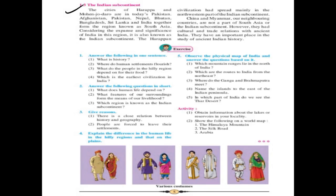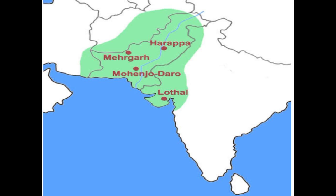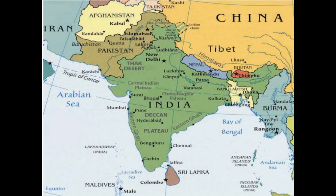The Indian Subcontinent. The cities of Harappa and Mohenjo-daro existed in ancient India, but after partition, they came to be located in Pakistan. Afghanistan, Pakistan, India, Sri Lanka, China, Nepal, and Bhutan are the countries that lie in South Asia. These South Asian countries together form a region called the Indian Subcontinent.